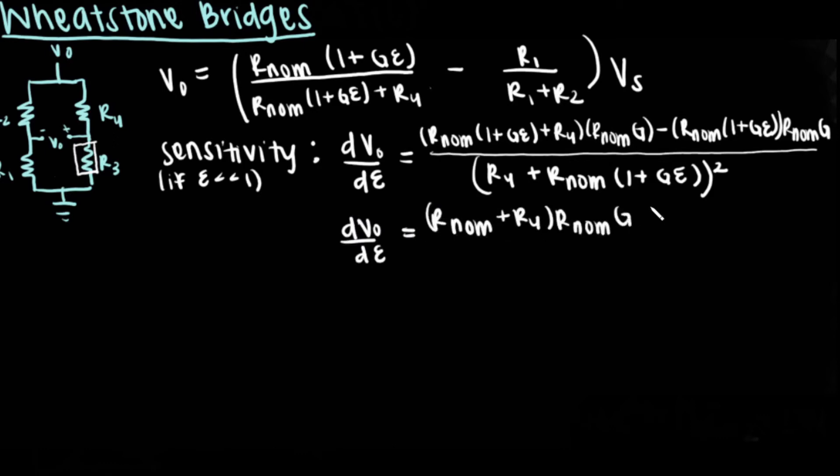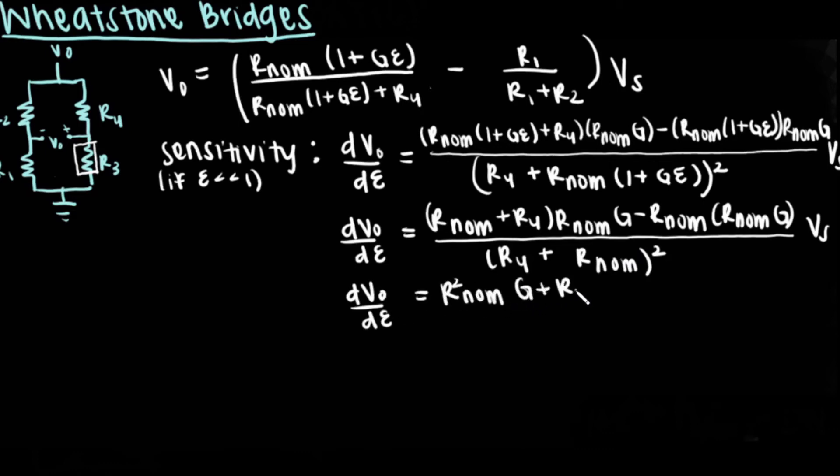Setting all these resistors to be equal to each other to achieve the maximum sensitivity, the equation simplifies again to be sensitivity is equal to GVs divided by 4. If temperature were included in the strain gauge resistance, it would not be compensated because it would not cancel out.